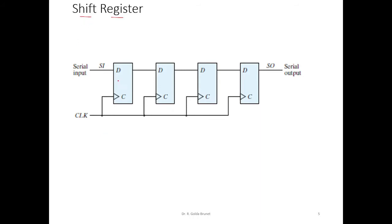Now let's look at the construction of a 4-bit shift register. Since we consider a 4-bit shift register, we will use four flip-flops. All the flip-flops are connected to a common clock, and the flip-flops are connected to each other in a cascade fashion — the output of one flip-flop is connected to the input of the next flip-flop.